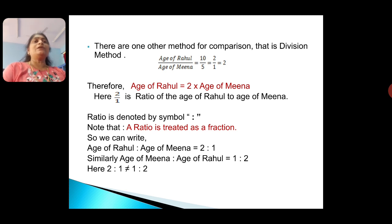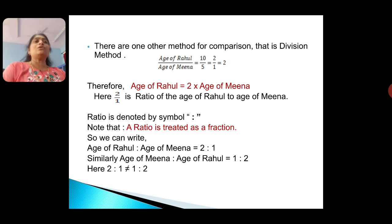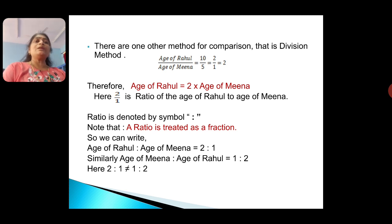Therefore, age of Rahul equals 2 times the age of Mina. Here, 2 by 1 is the ratio of age of Rahul to age of Mina. Ratio is denoted by the symbol colon. Note that a ratio is treated as a fraction. So we can write: age of Rahul ratio age of Mina equals 2 ratio 1. Similarly, age of Mina ratio age of Rahul equals 1 ratio 2. Note that 2 ratio 1 is not equal to 1 ratio 2.